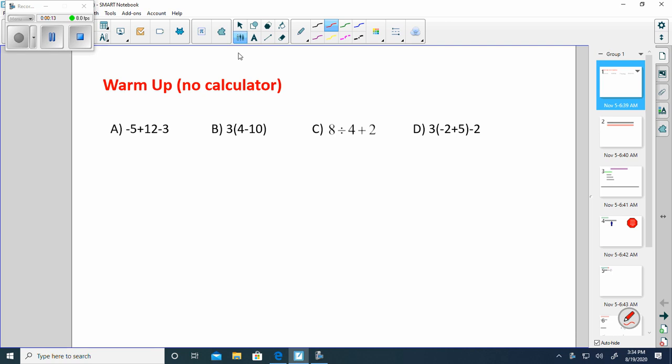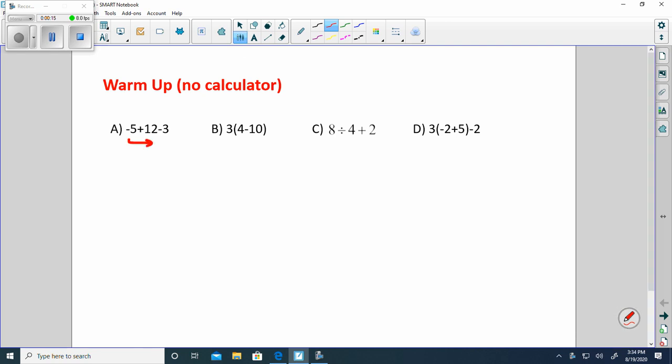So we're going to do order of operations. We're going to go left to right. Negative 5 plus 12. Something you want to buy is 5 bucks, you have $12 in pocket, so you have 7 left. 7 minus 3 is negative 4.